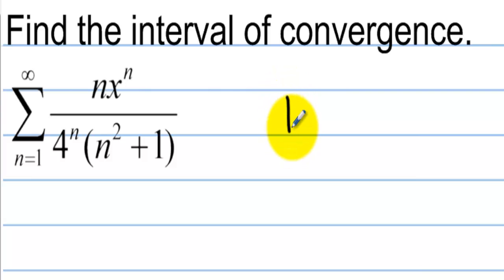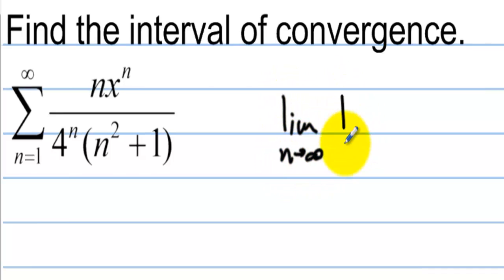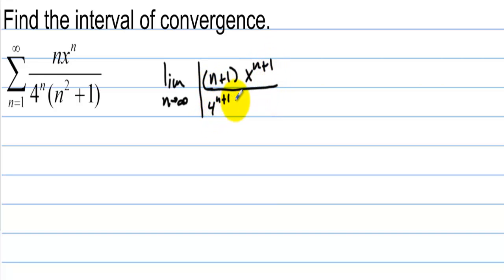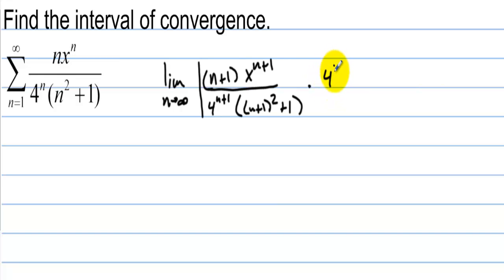Let's start out with the ratio test. We have the limit as n approaches infinity of the absolute value of n plus 1 times x to the n plus 1 over 4 to the n plus 1, and then we have n plus 1 squared plus 1. We multiply that times 4 to the n times n squared plus 1 over n times x to the n.